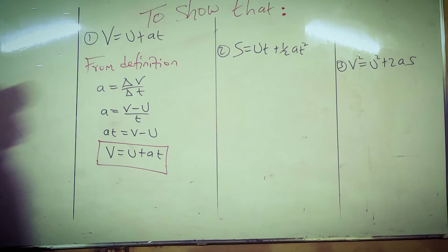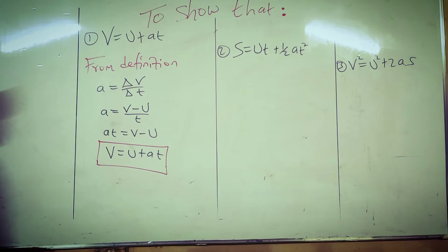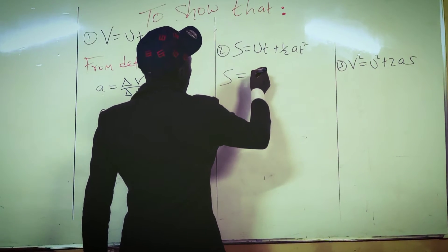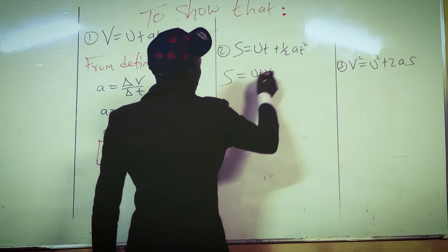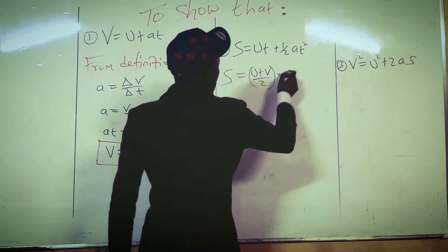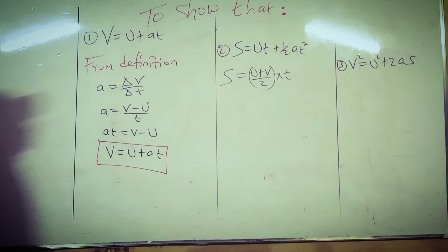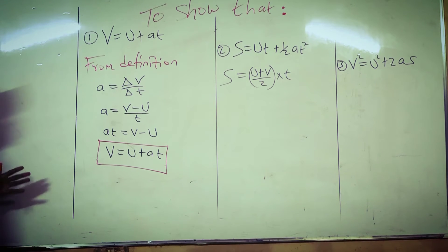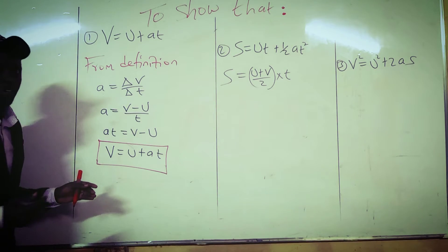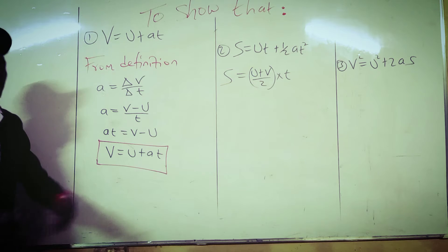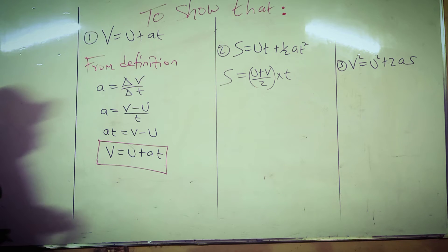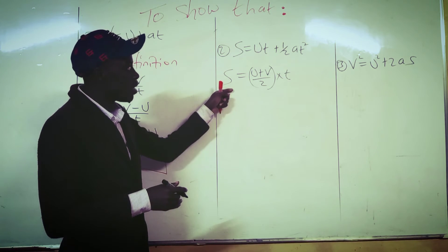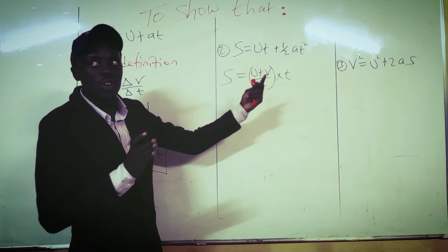Now we derive the second equation. We know displacement is given by average velocity times time. We use average velocity because these three equations apply for a body moving with non-uniform speed — meaning the body is either accelerating or decelerating, for example a car starting from stationary or stopping. So the velocity is not constant, and we take the average of the velocities times time.